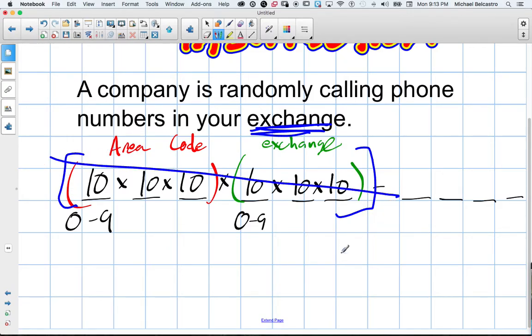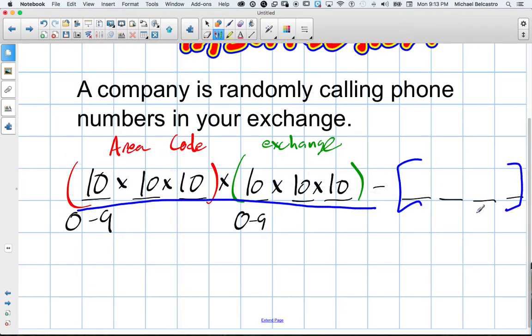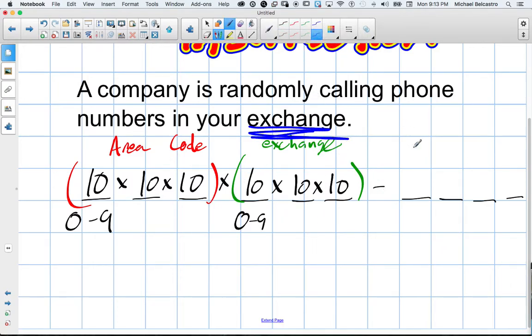But because they said that they're only calling people from our exchange, none of this is relevant. None of that stuff is relevant because what they're saying is all these numbers are the same and they just want to know what's the probability of dialing your number in your exchange. And that is strictly dealing with the last four digits.